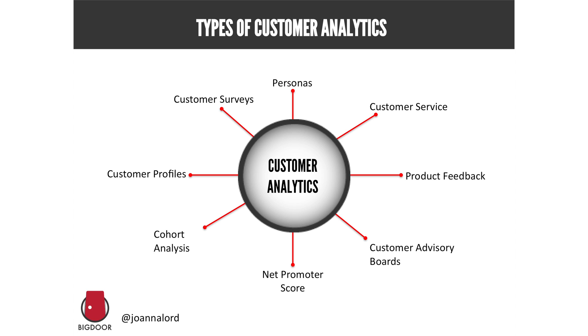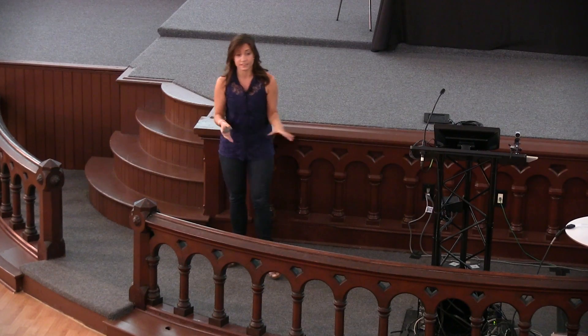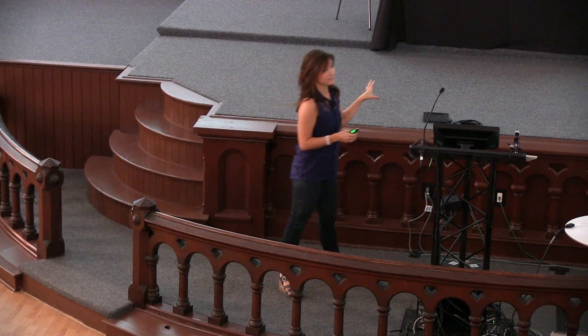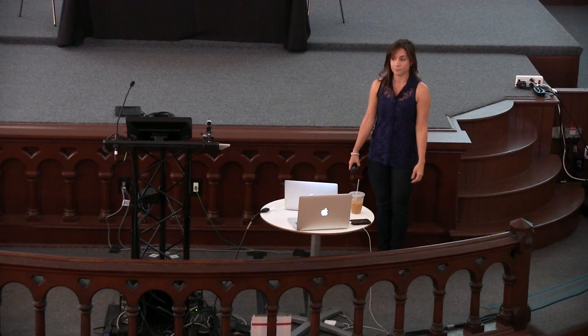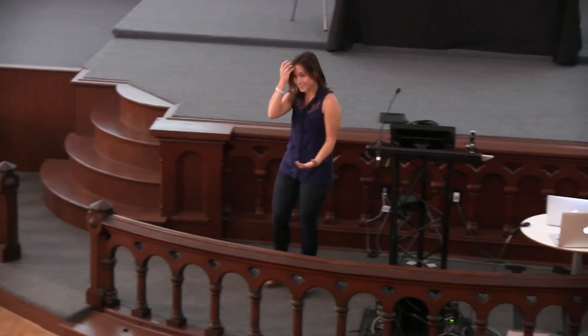Customer service — we know our customer service teams hear the most from our customers, but a lot of the time it's just me stopping by reactively, like 'is there a big problem?' Instead, you should be empowering your customer service teams to summarize what they're hearing, be the pulse of your customer, and surface it to the rest of the company. Product feedback is the same thing — marketing and product are coming together, not just in product marketing, but they're starting to merge.